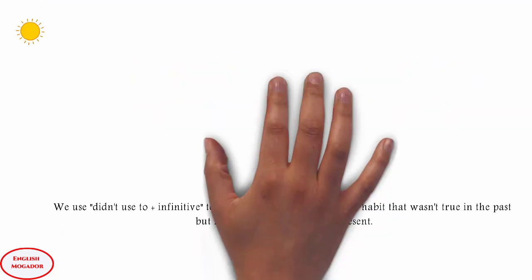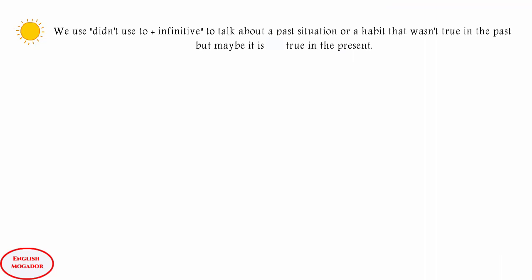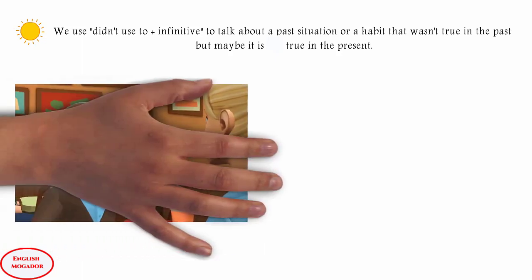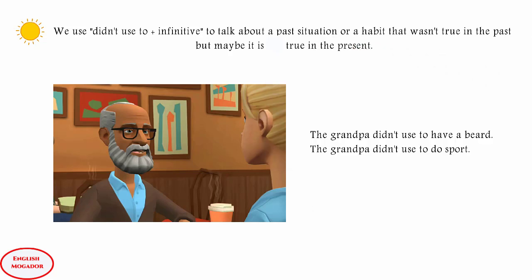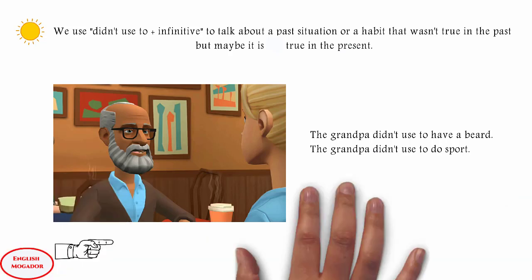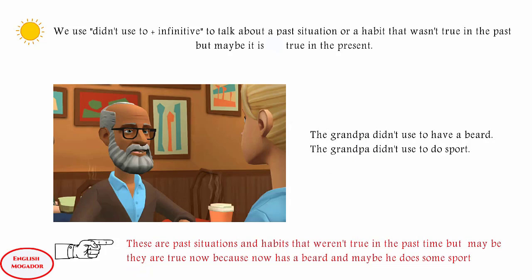Now let's consider some negative sentences. We use the form 'didn't use to' plus infinitive to talk about a past situation or a habit that wasn't true in the past, but maybe it is true in the present. For example: 'But I didn't use to have a beard.' 'I didn't use to do any sport.' So the grandpa didn't use to have a beard and didn't use to do sport. These are past situations that weren't true in the past, but maybe they are true now because the grandpa has a beard and maybe he does some sport.